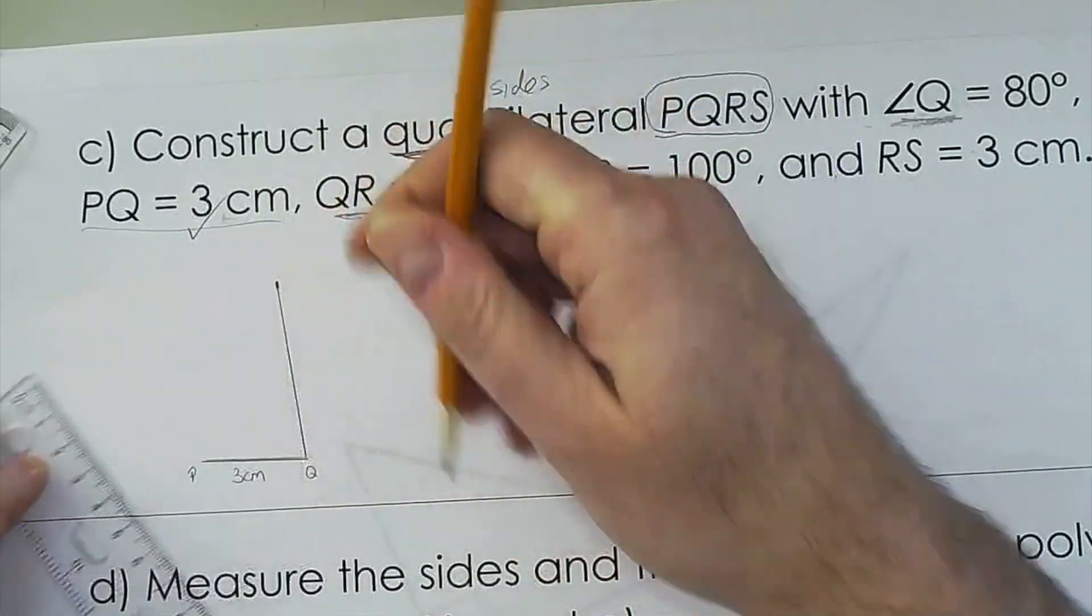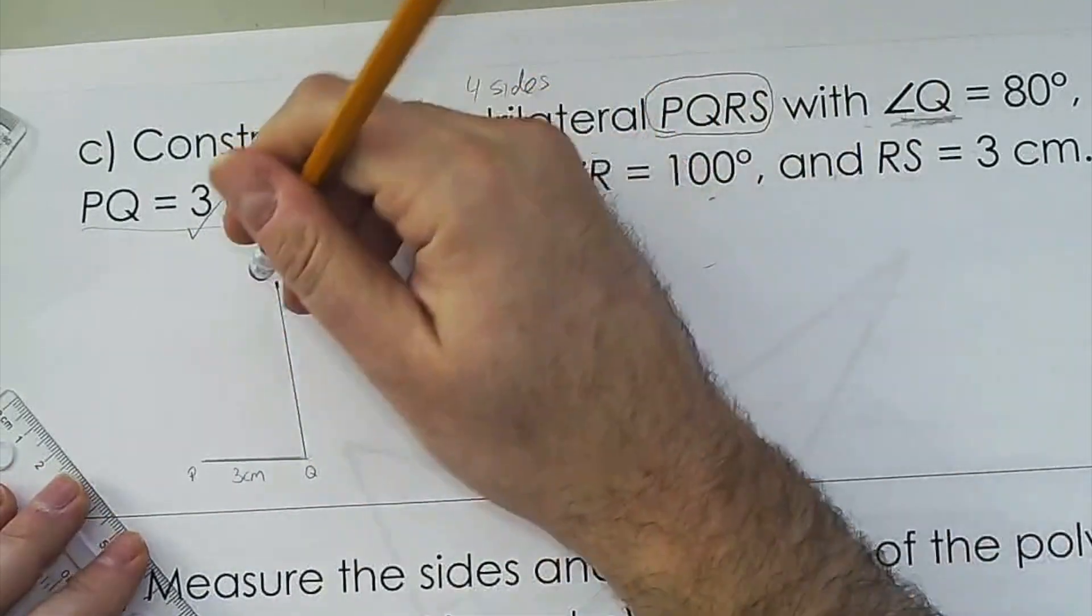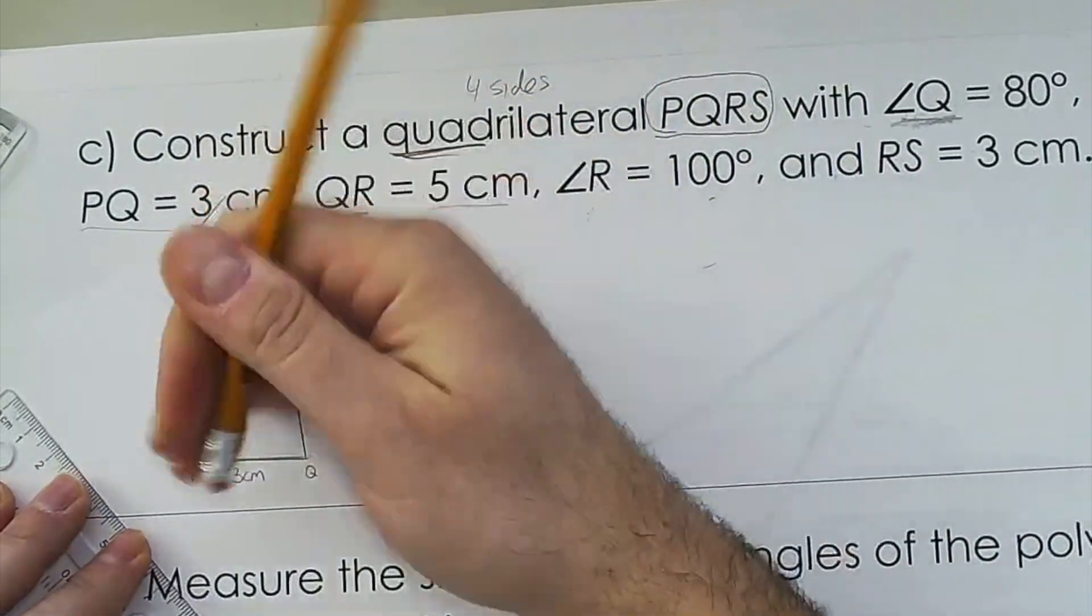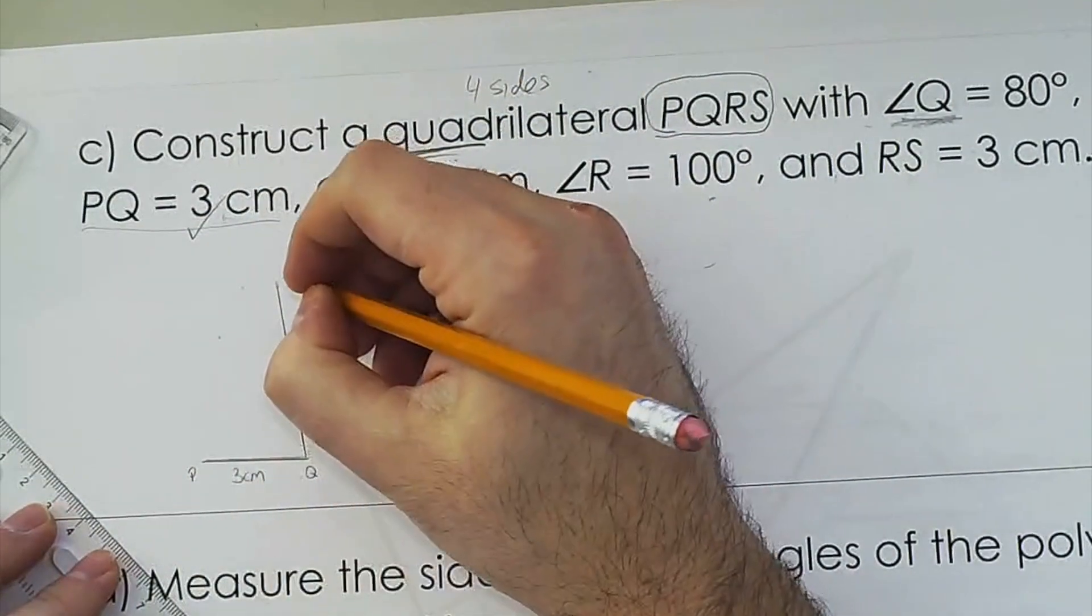Okay. So I'm just going to erase this top part here, there you go. So I'm going to label this R.